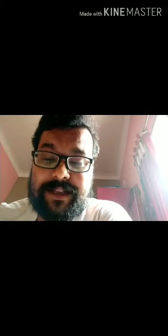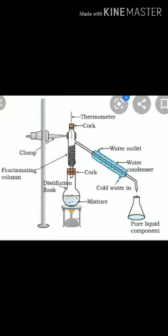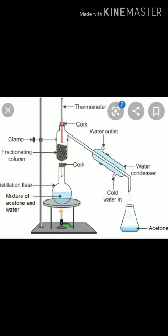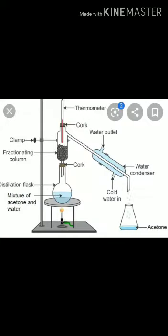First, we heat the mixture in a round-bottom flask. Due to heating, the liquid component in the mixture evaporates and the solid component is left behind. A condenser is fitted to the flask, and the vapours of the liquid rise and pass through the condenser where they cool down and condense to form a pure liquid. This pure liquid is collected in a separate flask.